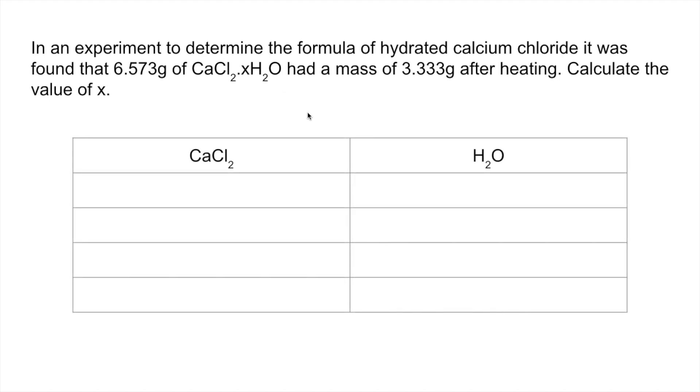So we'll put a table up with the two parts in and then put the masses. Where does this 3.24 grams come from? Well they've heated 6.573 grams of this, pushed all the water out and left with that. So that's obviously anhydrous mass, so the difference must be the water that's escaped. If we bring in the MR of the two parts and then divide the mass over the MR, we get the moles. Divide by the smallest gets us the ratio 1 to 6, and so the formula will be CaCl2·6H2O.